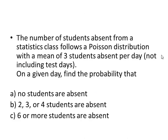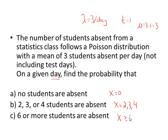The number of students absent from a statistics class follows a Poisson distribution with a mean of 3 students absent per day. On a given day, find the probability that. We've got a few problems to work with here. Lambda is 3 students per day. The question all asks about a given day, so t is 1. That makes mu equal to 3 times 1, or 3. And in each problem, we have a different value of x to work with. No students are absent, x equals 0. 2, 3, or 4 students are absent, x equals 2, 3, or 4. 6 or more students are absent, x greater than or equal to 6.